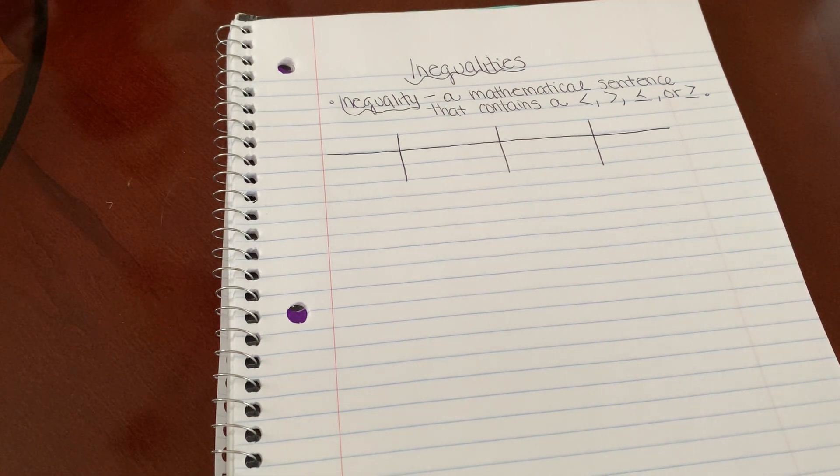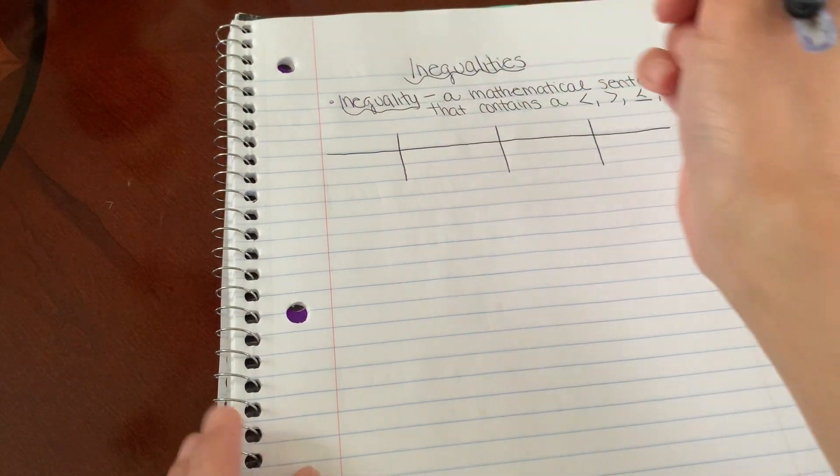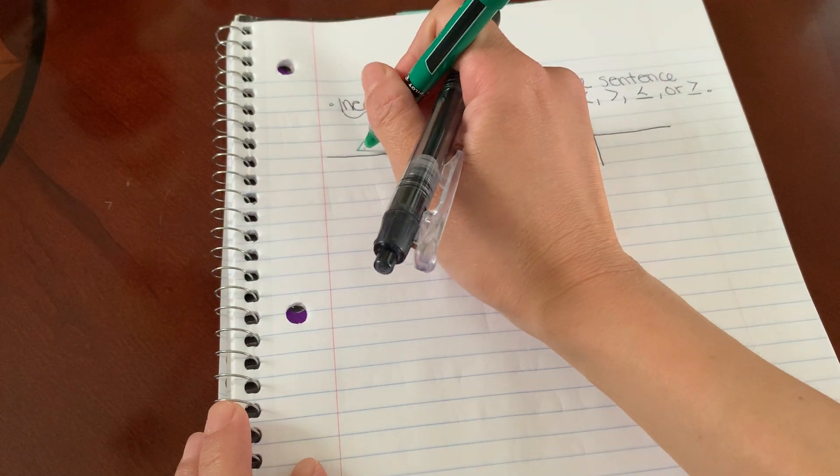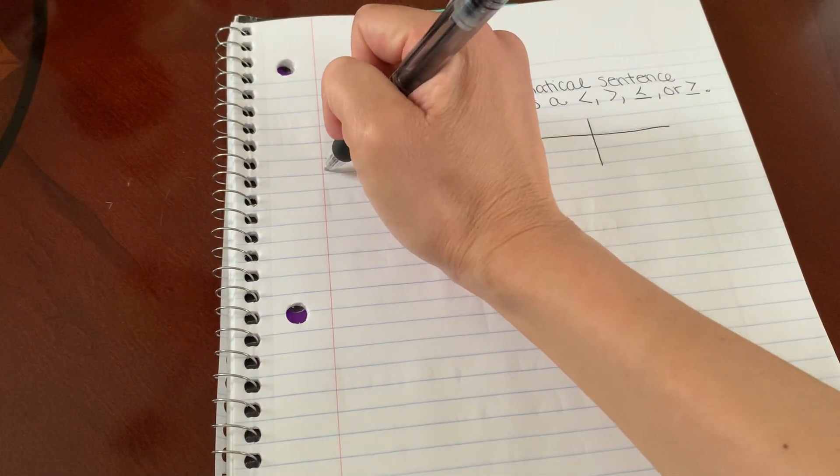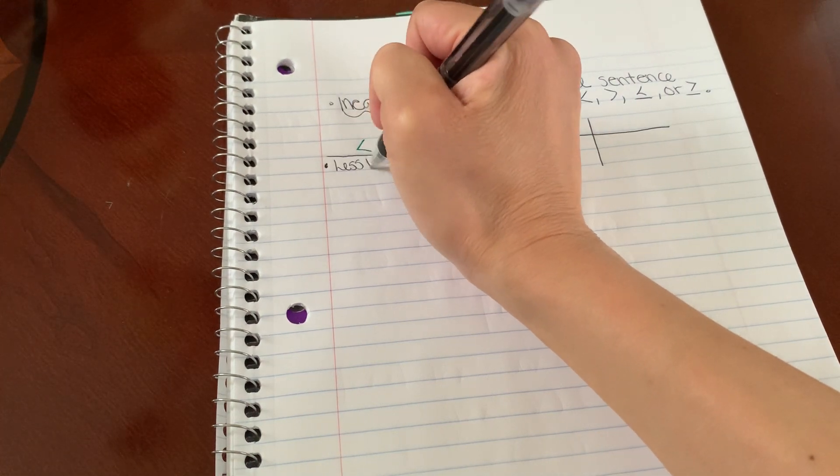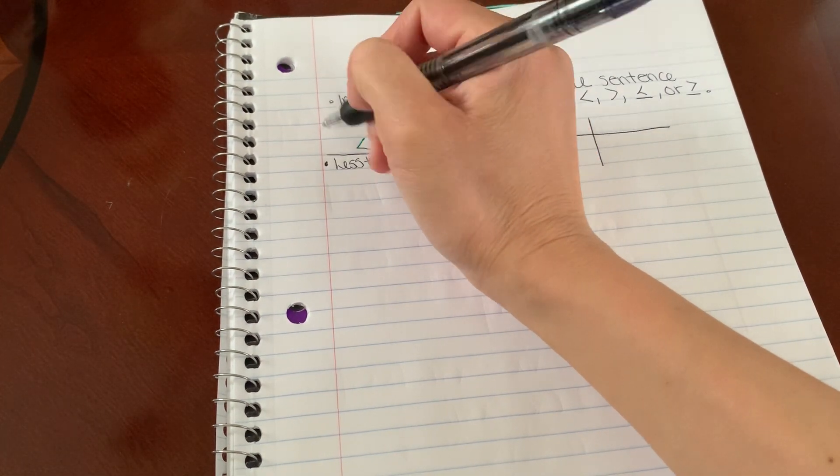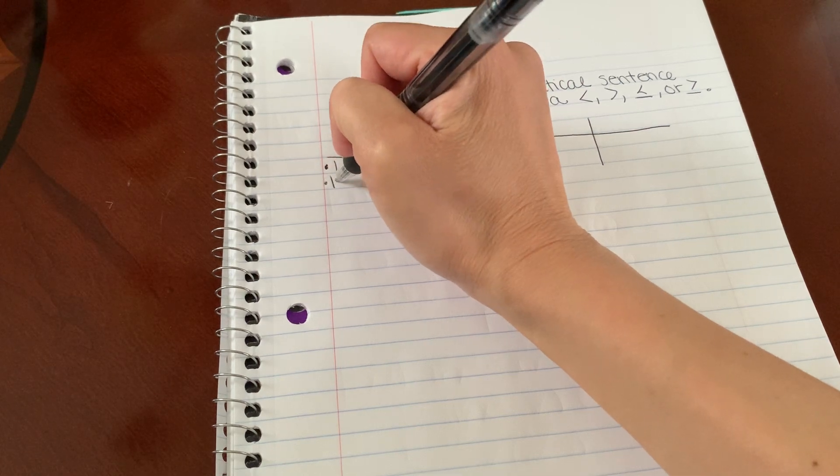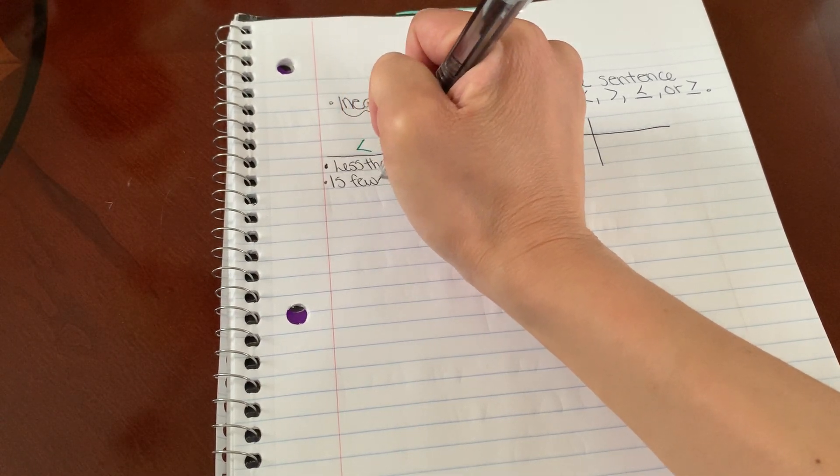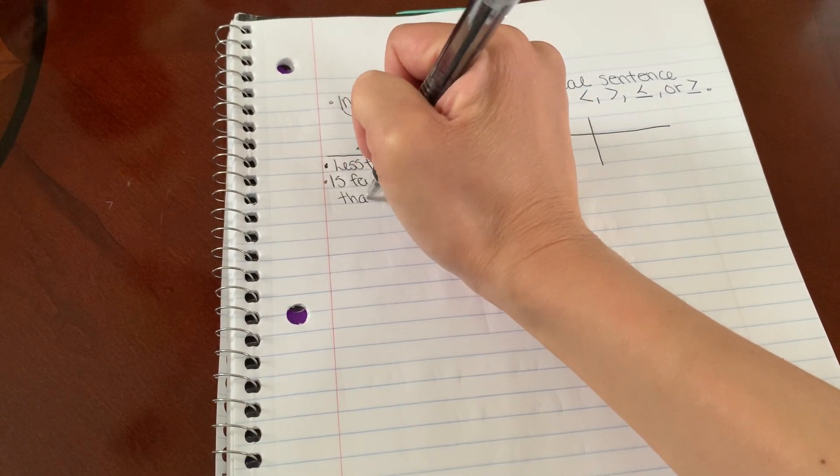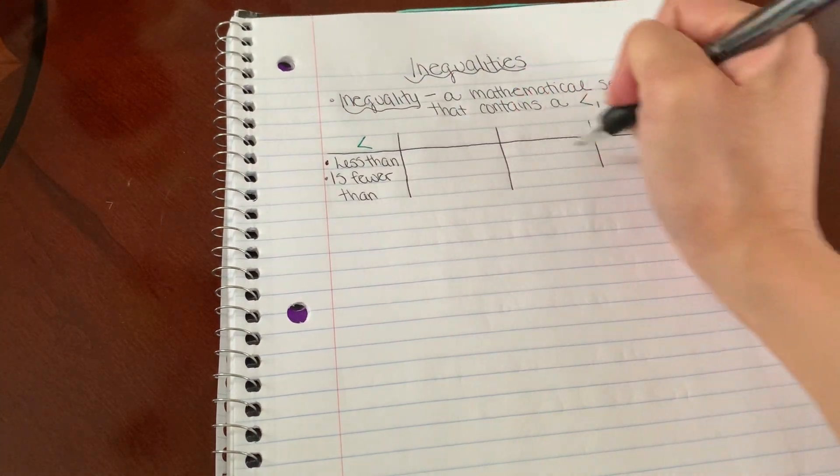And we're going to draw each of the symbols so we know exactly what they mean. So this symbol is less than, or you can also describe it as is fewer than. Make my lines a little longer here.